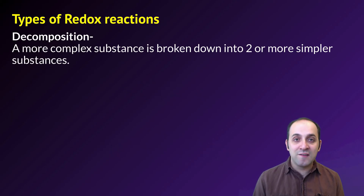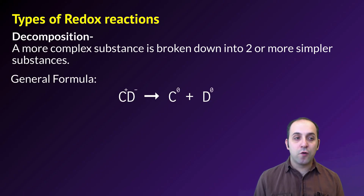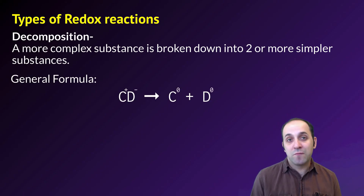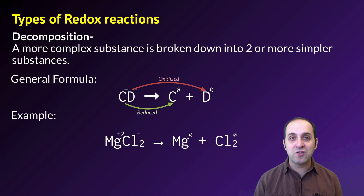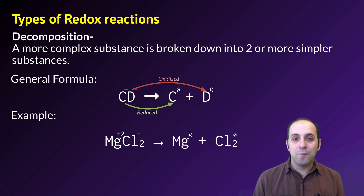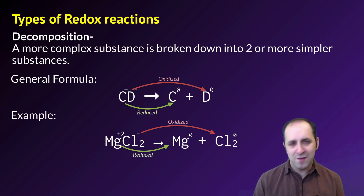The opposite of a synthesis reaction is a decomposition reaction. In a decomposition reaction, a more complex substance is broken down into two or more simpler substances. The general formula would be CD yields C plus D. D is going from a negative value to zero so it's oxidized, and C is going from a positive value to zero so it's reduced. Our example is the decomposition of magnesium chloride into magnesium and chlorine — chlorine is oxidized from the chloride ion into chlorine gas, and magnesium is reduced from the magnesium ion into pure elemental magnesium.